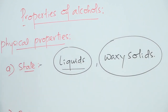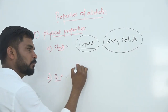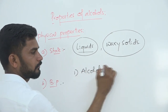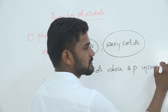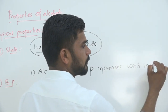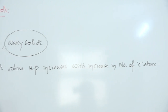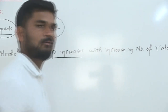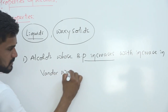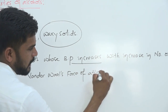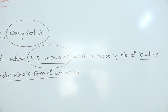The second physical property is boiling point. The first point is that the boiling point of alcohols increases with increase in the number of carbon atoms. As the number of carbon atoms increases, the van der Waals' force of attraction increases, which causes an increase in the boiling point of alcohols.